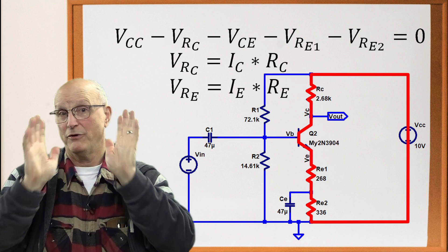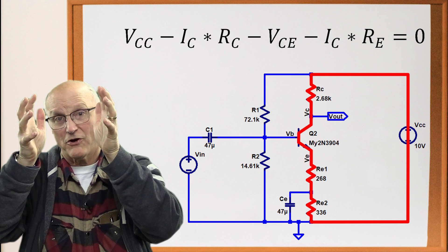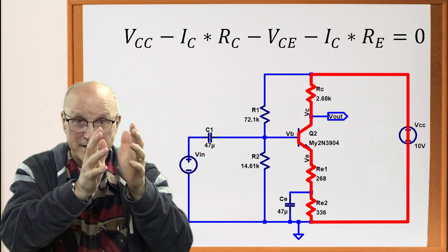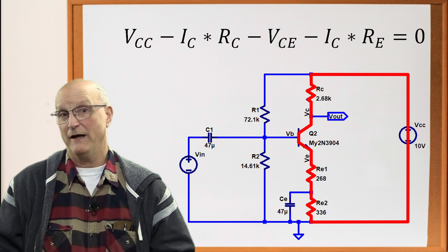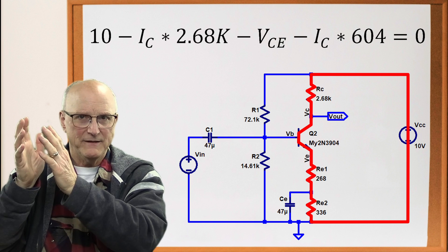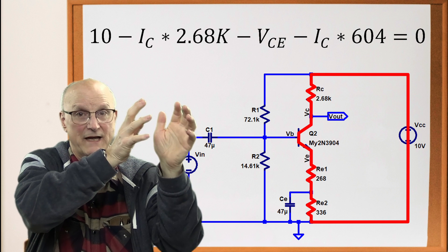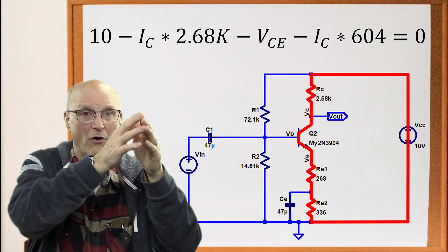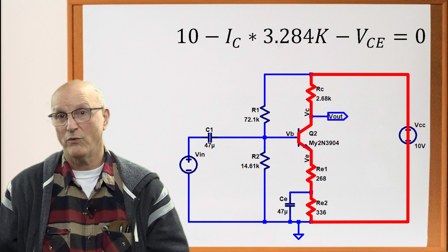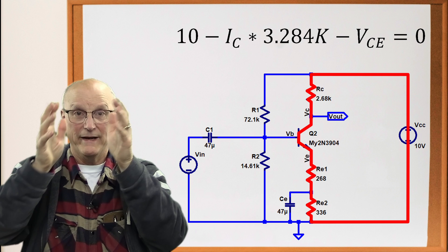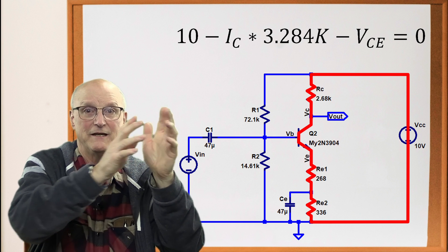Now we take all of this and put it into our KVL equation. We get VCC minus IC times RC minus VCE minus IC times 604 ohms all equals zero. Combining all the like terms we get this modified KVL equation: 10 minus IC times 3.284K minus VCE equals zero.